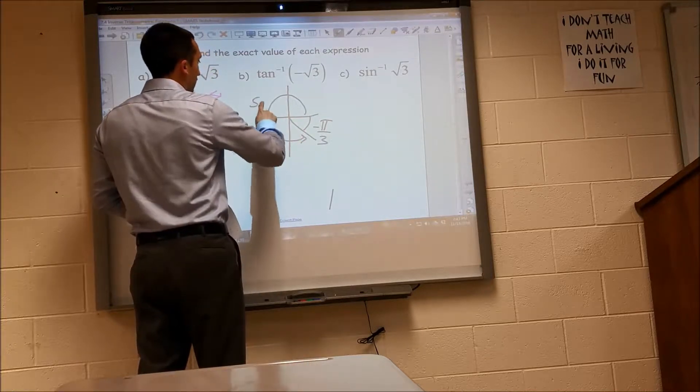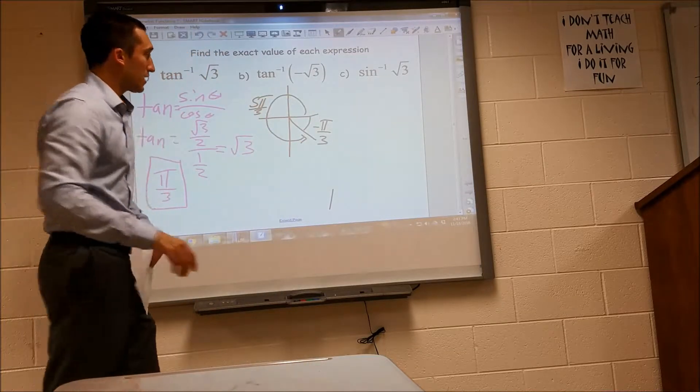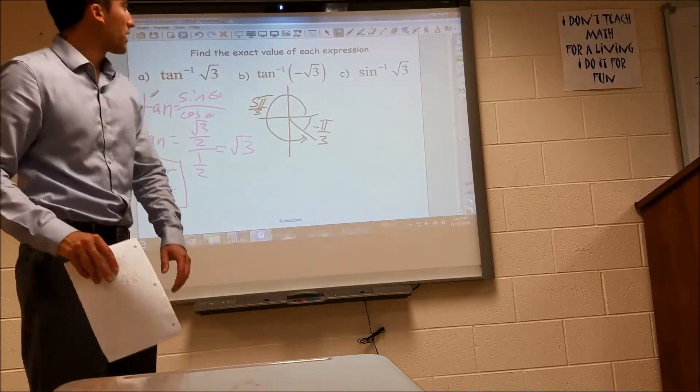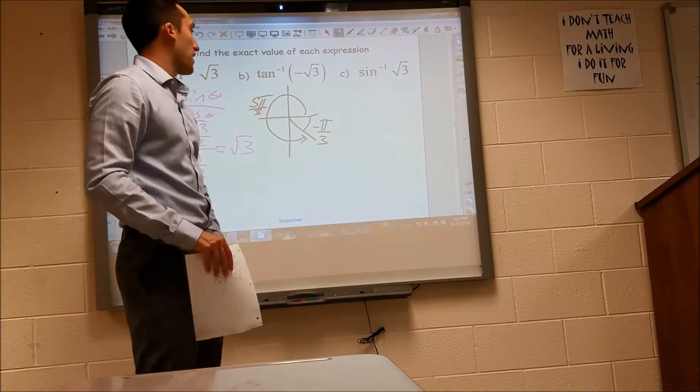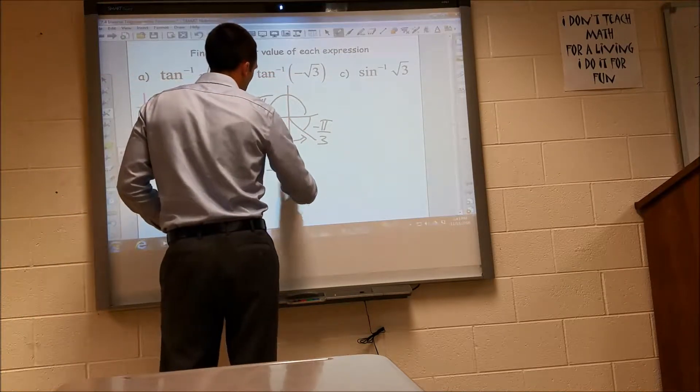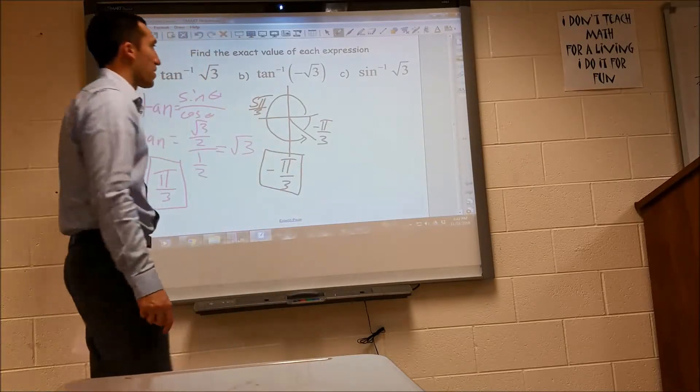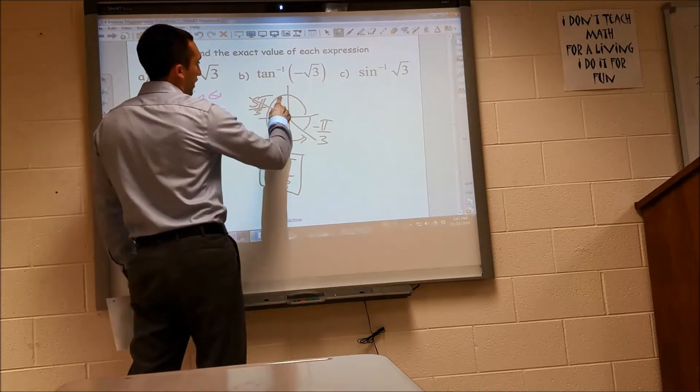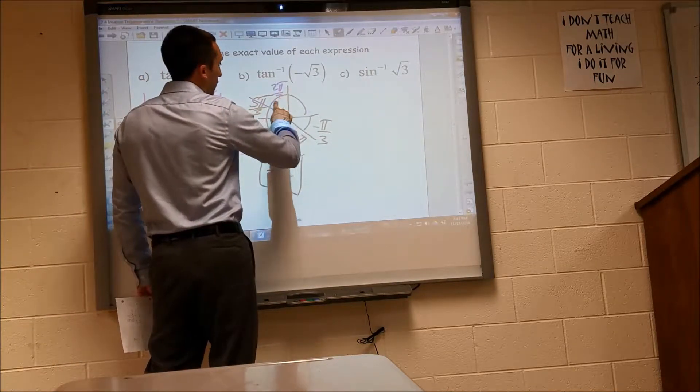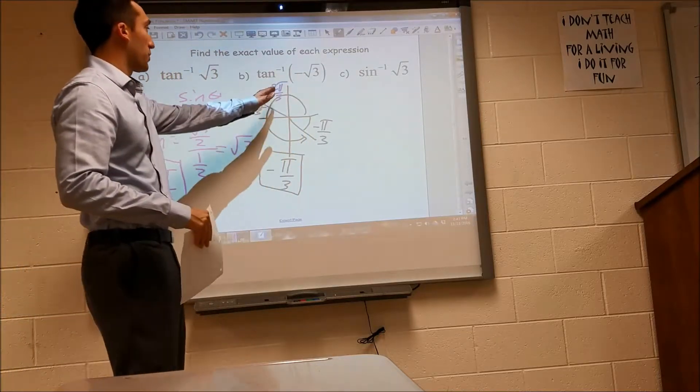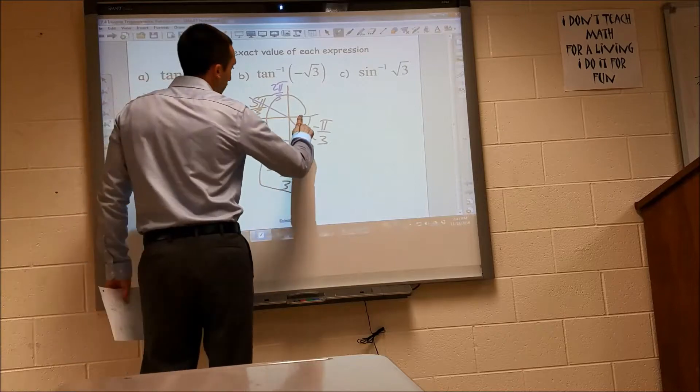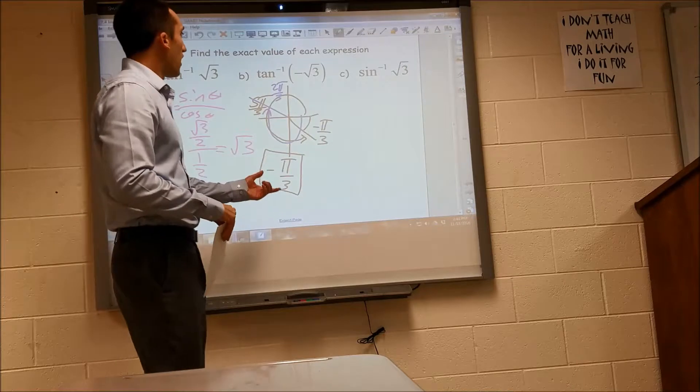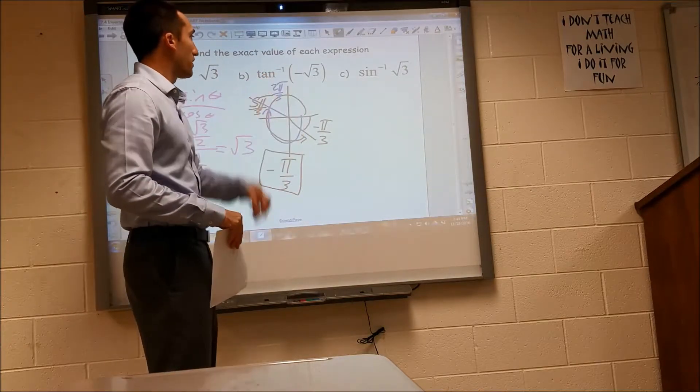Or 5 pi over 3. So you can see that either of these values, either of these angles will get me back to negative radical 3. Also, you can have values in the 2nd quadrant. So you can have 2 pi over 3, that would work too. Tangent's going to be negative in the 2nd quadrant. Or you can have negative 4 pi over 3. All of those values, if you do inverse tangent, will give you negative radical 3.